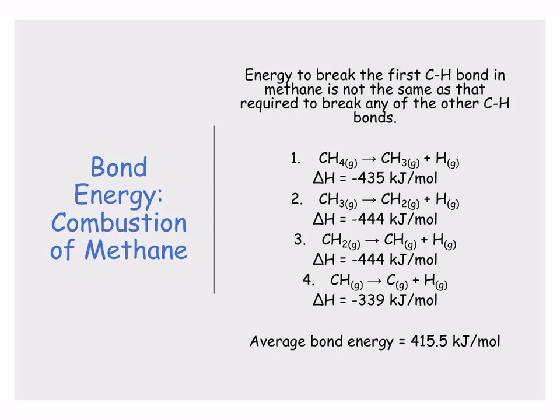Looking at bond energy in the combustion of methane: the first thing we need to realise is there are four carbon-to-hydrogen bonds in methane. The energy required to break that first C-H bond is not the same as the energy required to break the other C-H bonds. As you can see, there are four different values, and the average bond energy is obtained by breaking each bond one, two, three, then four, and averaging the results.